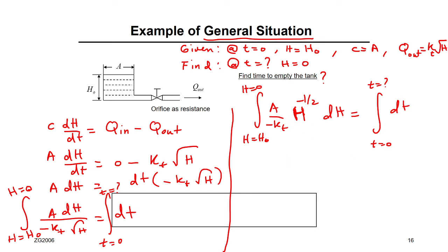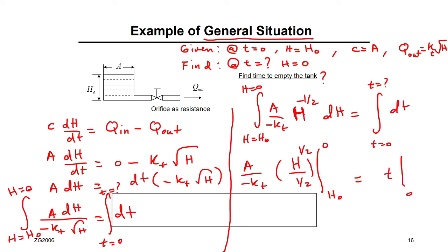After integration: the left side gives H^(1/2) divided by (1/2), with the constant A over (-K) outside, evaluated from H₀ to 0. The right side gives T minus 0 = T. Substituting the limits: 0 minus H₀^(1/2) over (1/2), multiplied by A over (-K).